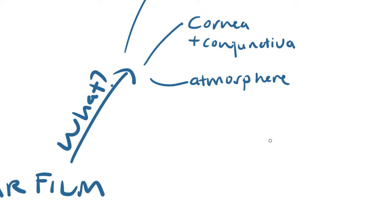Remember, we have three different types of conjunctiva: we have the bulbar, we have the fornicial, and we have the tarsal.